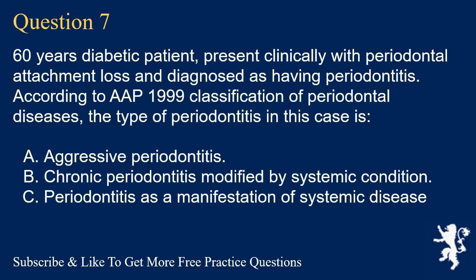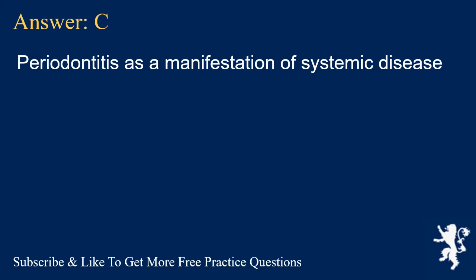Question 7. A 60-year-old diabetic patient presents clinically with periodontal attachment loss and is diagnosed as having periodontitis. According to the 1999 classification of periodontal diseases, the type of periodontitis in this case is? A. Aggressive periodontitis. B. Chronic periodontitis modified by systemic condition. C. Periodontitis as a manifestation of systemic disease. Answer: C. Periodontitis as a manifestation of systemic disease.